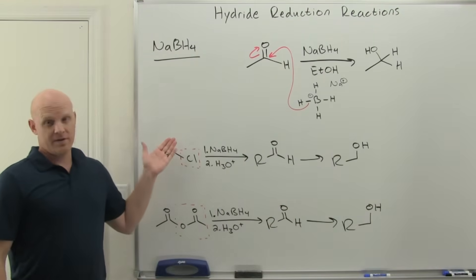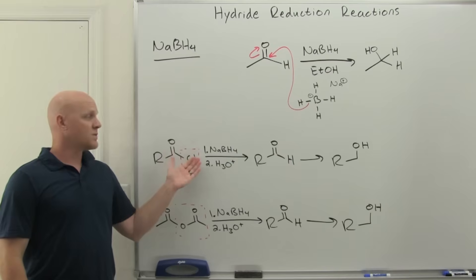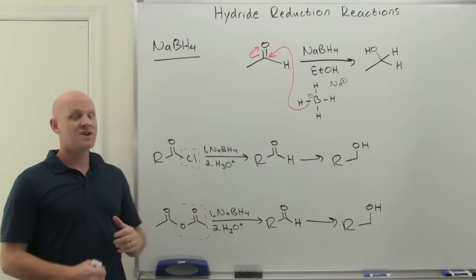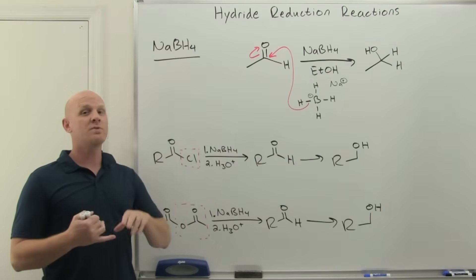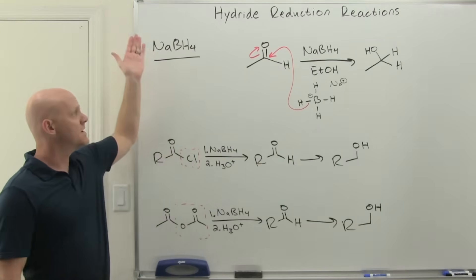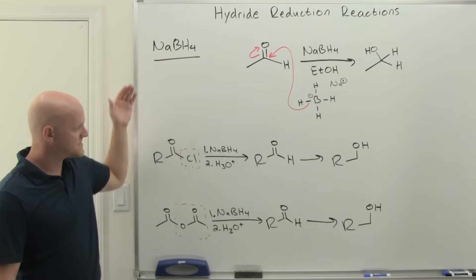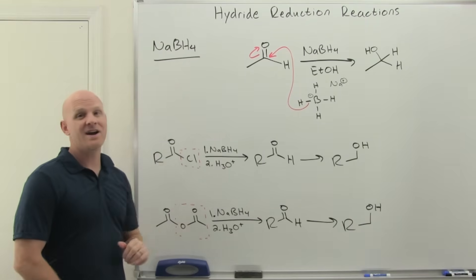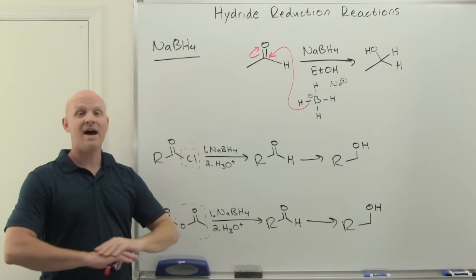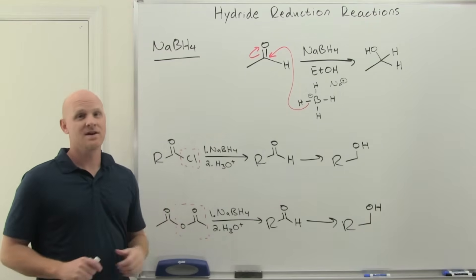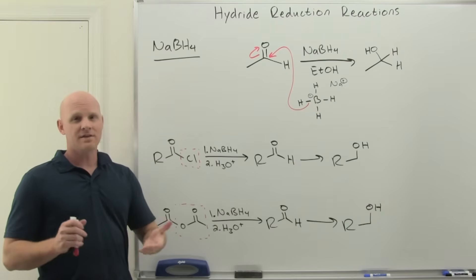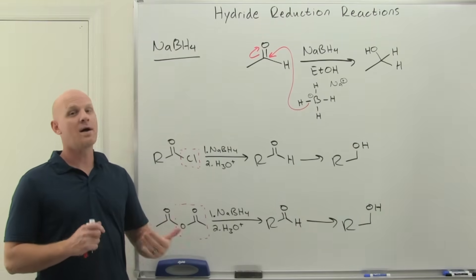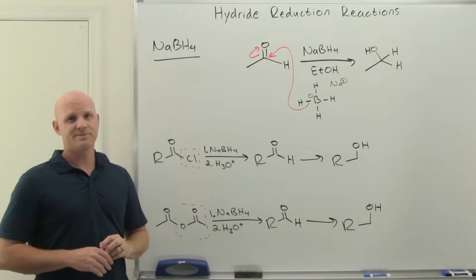In summary, sodium borohydride: we learned in the last chapter that it reduces both ketones and aldehydes, and now we see it also reduces acid halides and anhydrides — and that is it. Lithium aluminum hydride, being more reactive, is going to reduce a lot more functional groups.